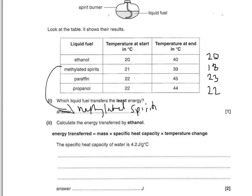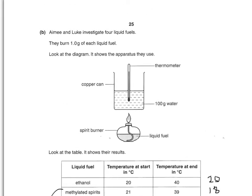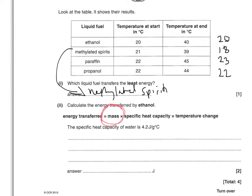Calculate the energy transferred by ethanol using the equation given. The important thing to remember is that the mass is not the mass of the fuel burnt — it is the mass of the water being heated. So it's 100 × 4.2 × temperature change. For ethanol the temperature change is 20°C, giving 8,400 joules.